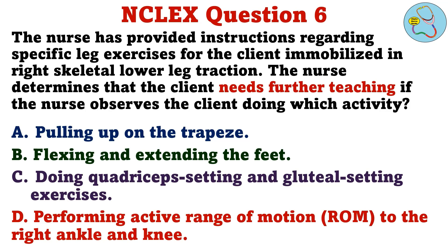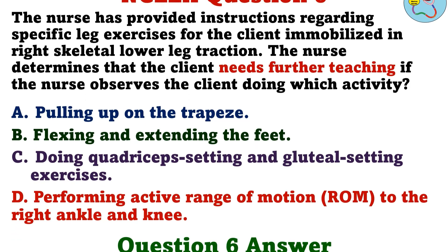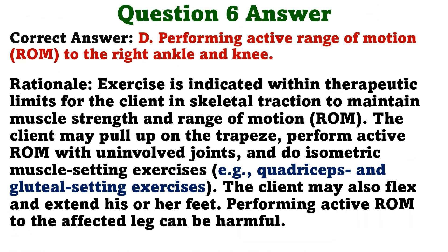The correct answer is d: performing active range of motion to the right ankle and knee. Rationale: exercise is indicated within therapeutic limits for the client in skeletal traction to maintain muscle strength and range of motion. The client may pull up on the trapeze, perform active range of motion with uninvolved joints, and do isometric muscle setting exercises.